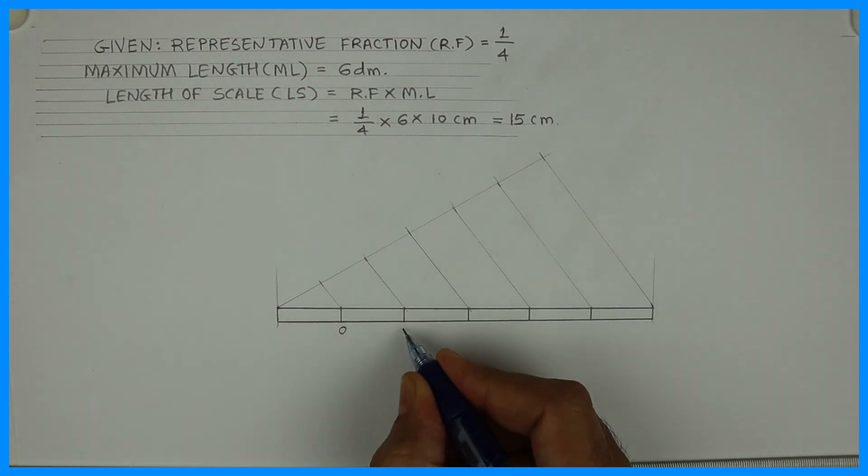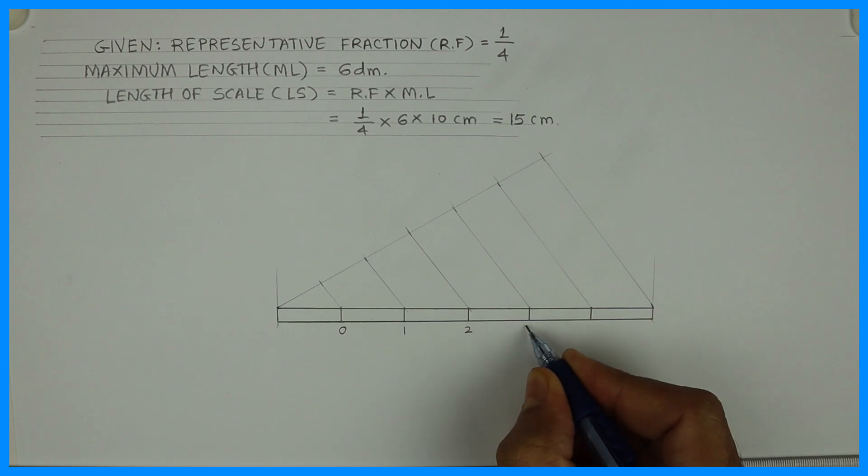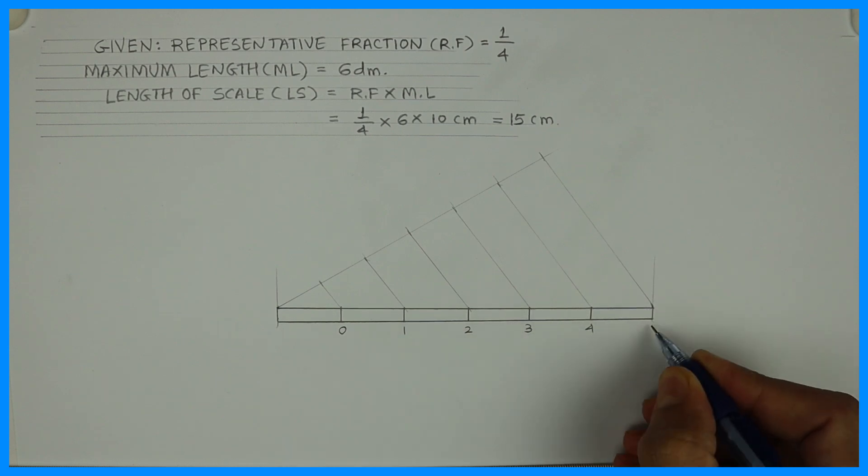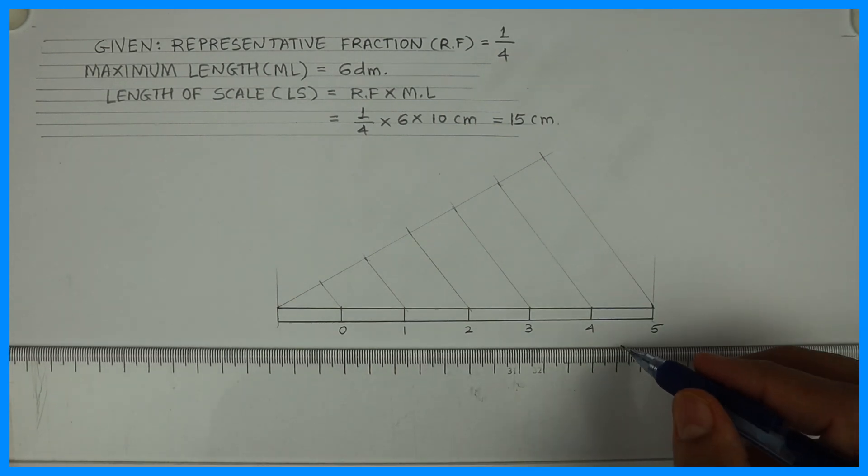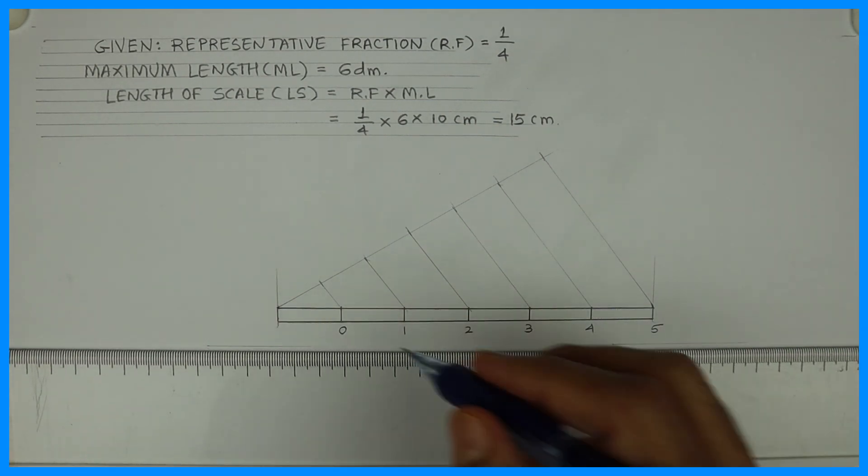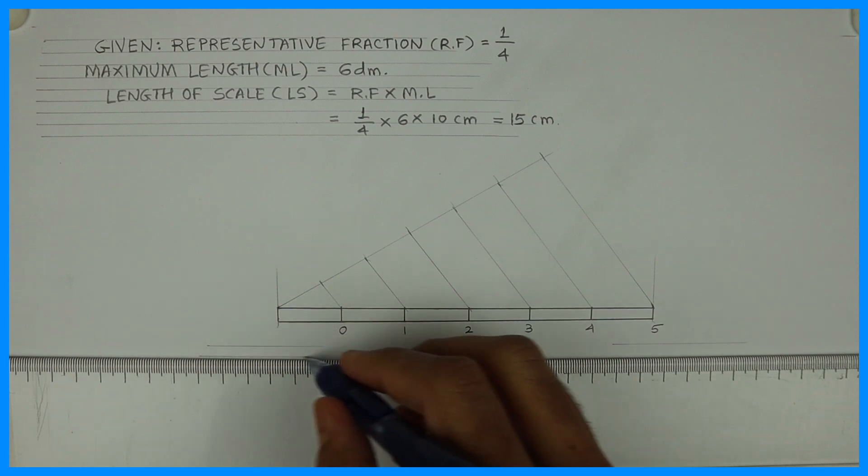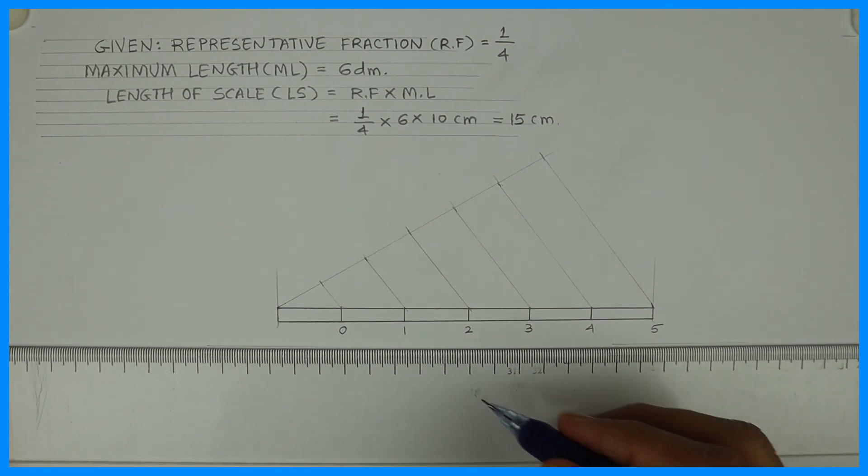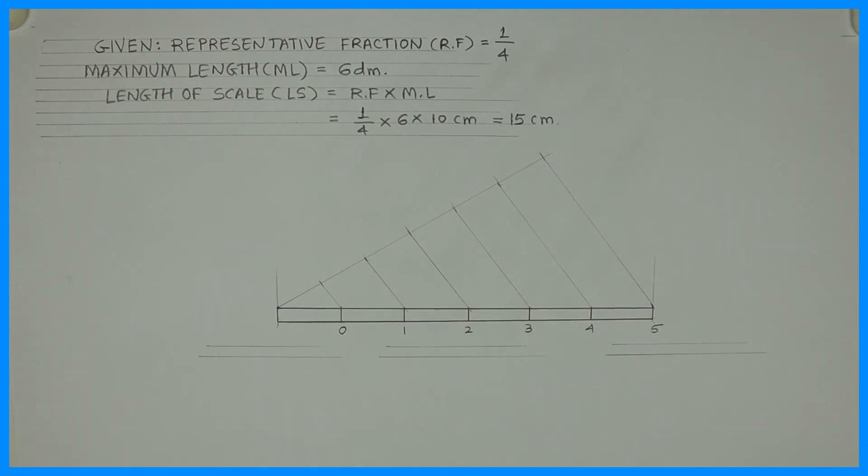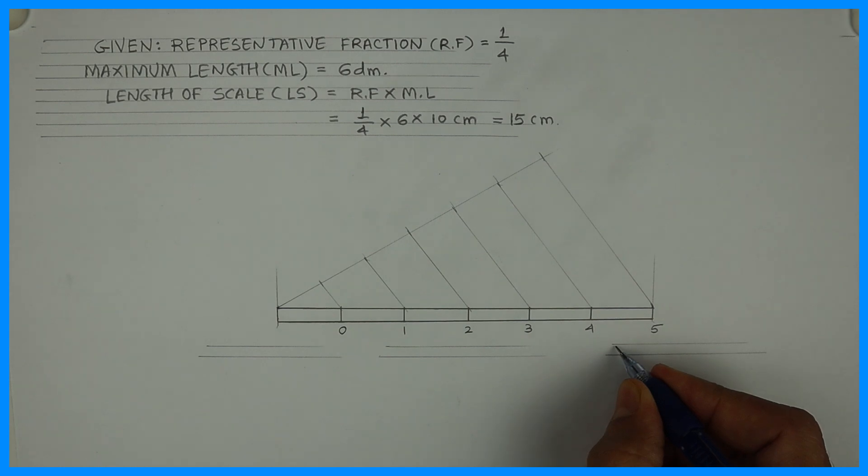I'm writing 0 from here. 1, 2, 3, 4, 5. Now we draw guideline and write decimeter on the extreme right side.